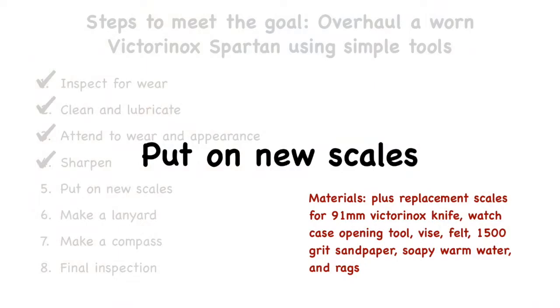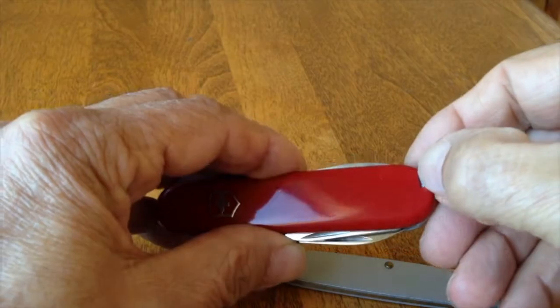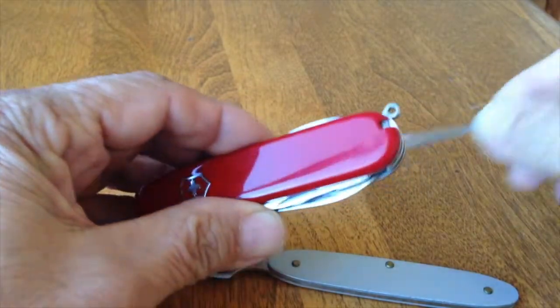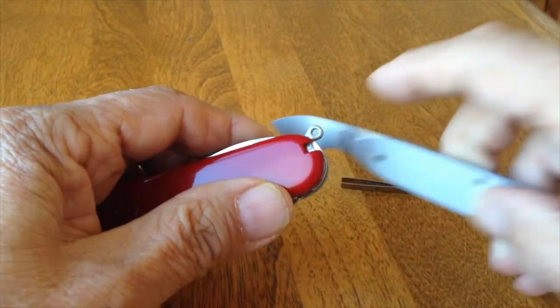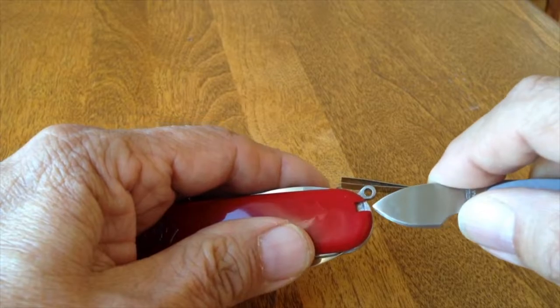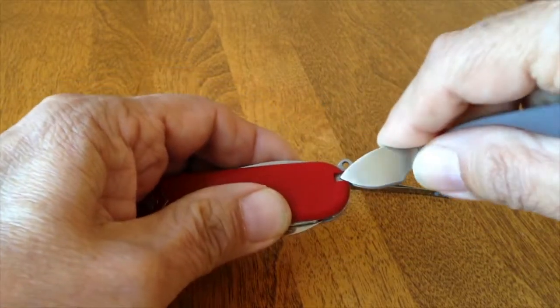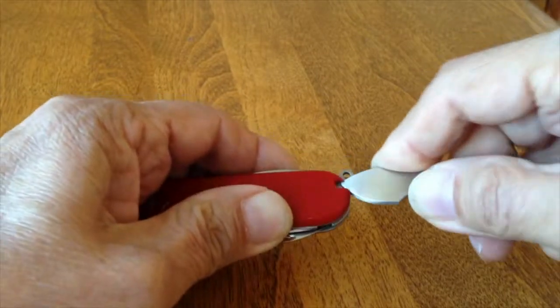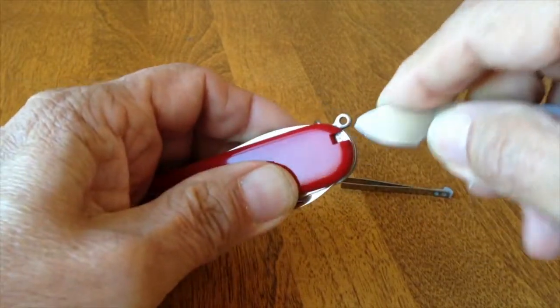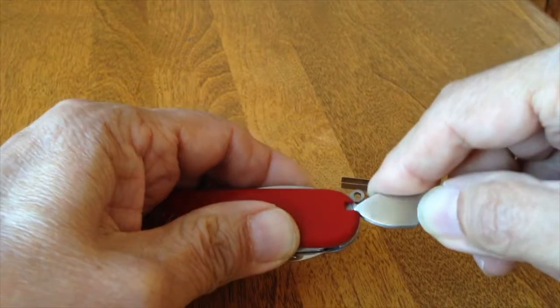Although the scales have taken a nice polish, there are still a few deeper dings that can't be removed. It's a good reminder that we get dinged and scarred as we go through life, but can still keep a sharp edge. I will, however, upgrade to a Spartan Plus for the person receiving this knife. The plus being the addition of a pen that is held in a knife scale.